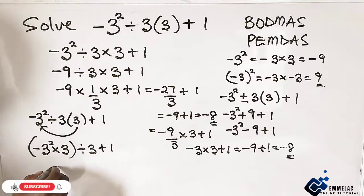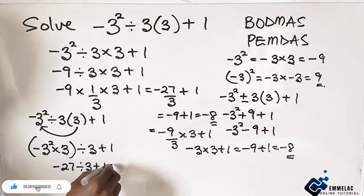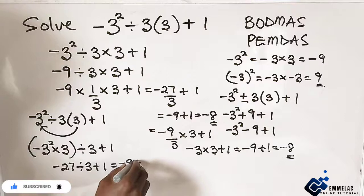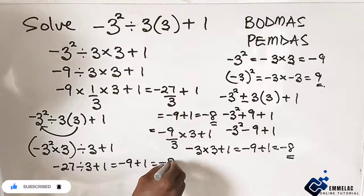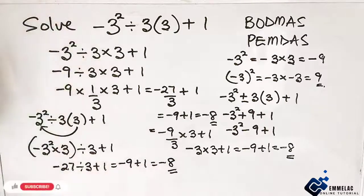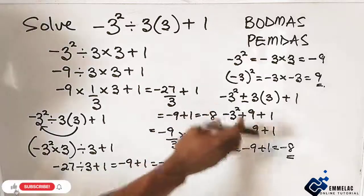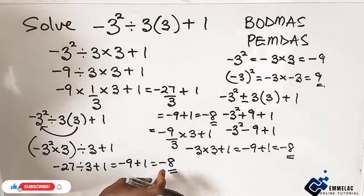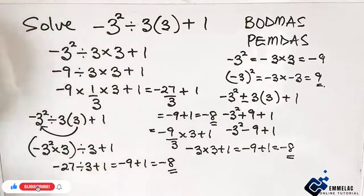So in this case here, we have what? -27 divided by 3 + 1, which is what? -9 + 1 equals what? -8. So you can see the various methods I've used which is trending towards -8.